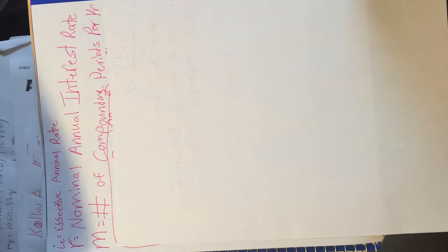First, let's define the variables. I_E, I sub E, is the effective annual rate. R is the nominal annual interest rate. M is the number of compounding periods per year.